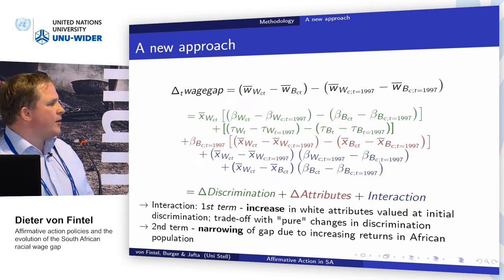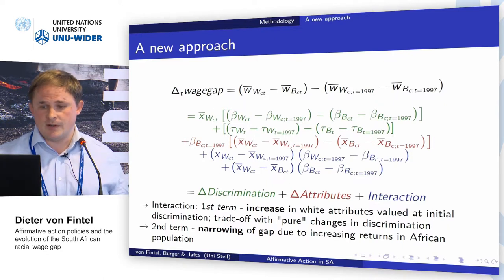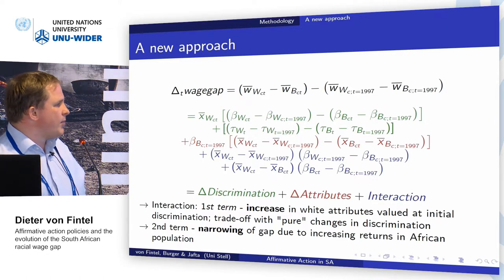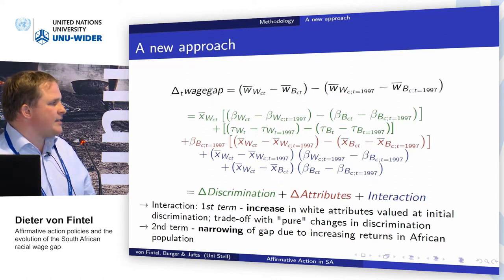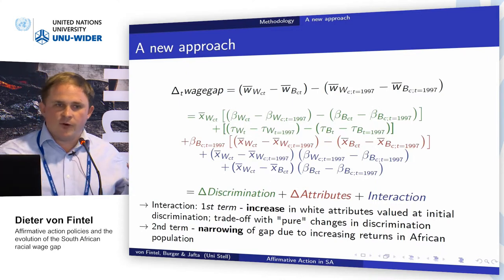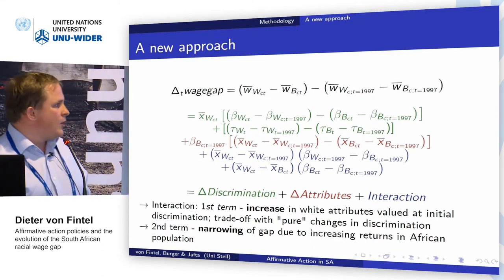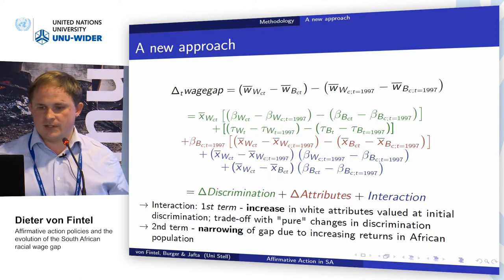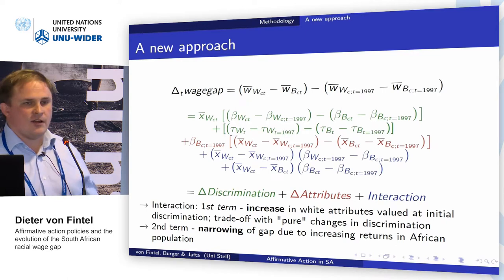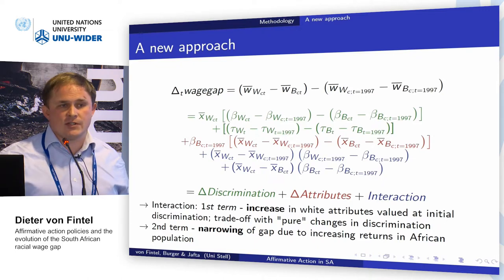We look at the change in the wage gap relative to a base period starting with 1997, just before the Employment Equity Act was implemented. We end up with an initial component relying on changes in coefficients — typically what we'd understand from an Oaxaca-Blinder decomposition. We then have a change in productivity component, since education has been strongly converging across race groups. There's also an interaction term: the first part measures the increase in white attributes valued at the initial discrimination — a persistent form of discrimination. The green component measures changes in discrimination that have happened.